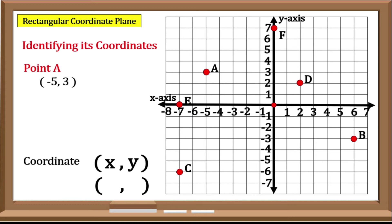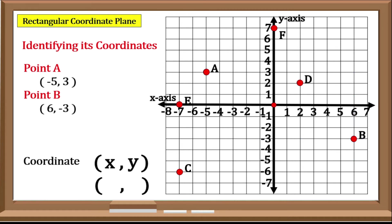So therefore, the coordinates of Point B are positive 6, negative 3.